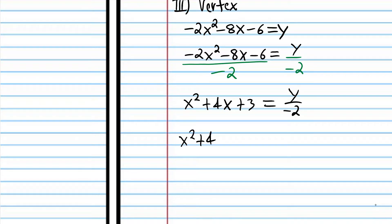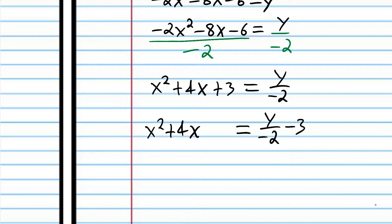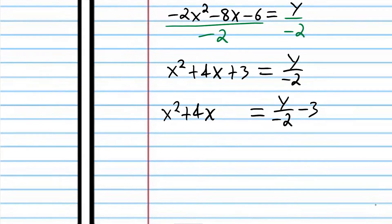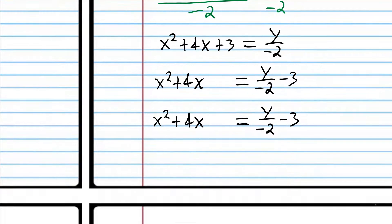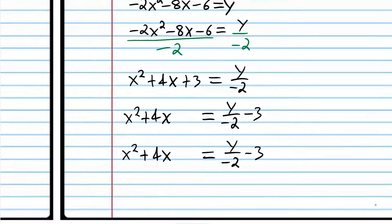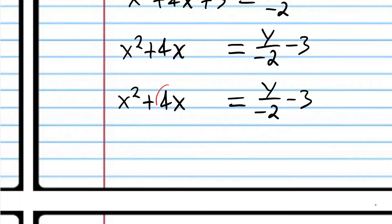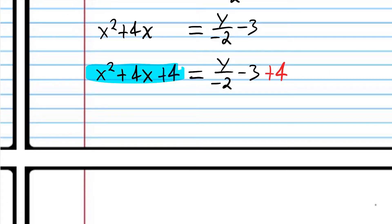We have not completed the square yet — we just prepared the equation. To complete the square, we need to know what number to add to both sides. We take the coefficient of x, divide by 2, and then square it: 4 divided by 2 is 2, and 2 squared is 4. So we're going to add 4 to both sides, and now this is a perfect square.